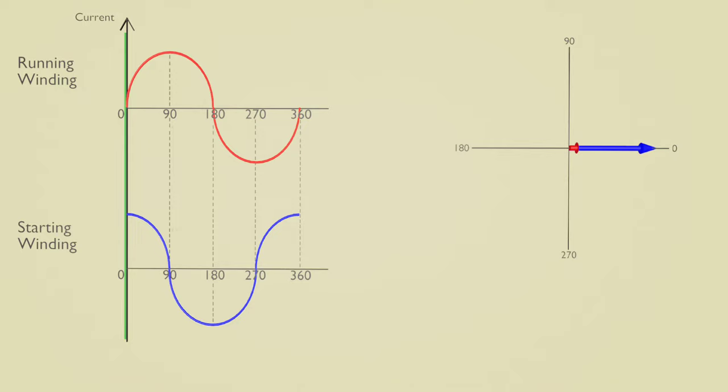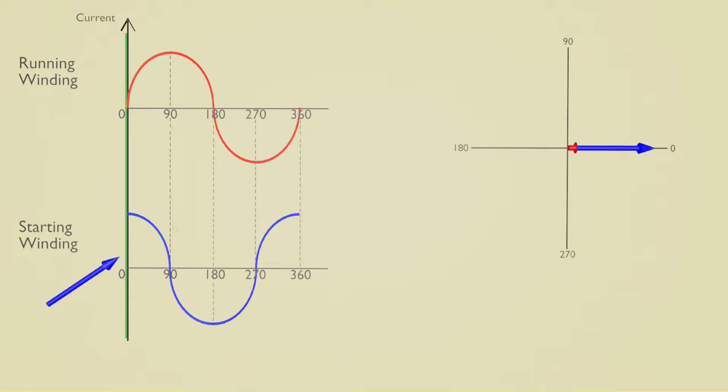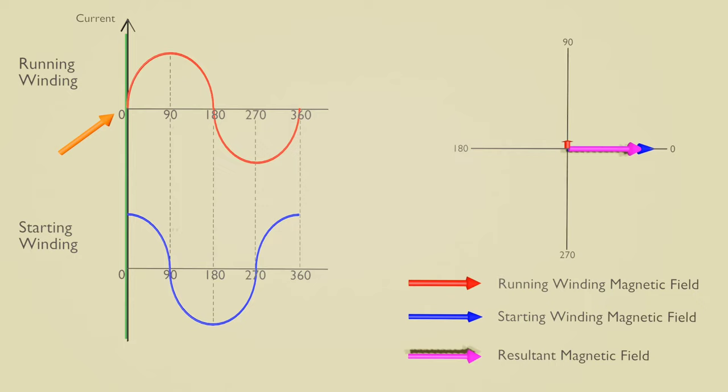There are two waveforms of current in starting winding and running winding. The capacitor is in series with starting winding, so the current in starting winding leads by 90 degrees. We know that the magnetic field or flux is directly proportional to the current, so the magnetic field of starting winding also leads by 90 degrees.